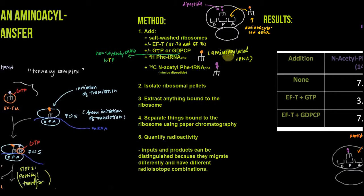Then we add tritiated phenylalanine-tRNA-phenylalanine, which is an aminoacyl-tRNA, and 14C N-acetyl-Phe-tRNA-Phe, a tRNA that mimics being charged with a dipeptide. After we add these things together, we'll isolate ribosomal pellets to see what's on the ribosome, extract anything bound to that ribosome, separate the things bound using paper chromatography, and then quantify the radioactivity.